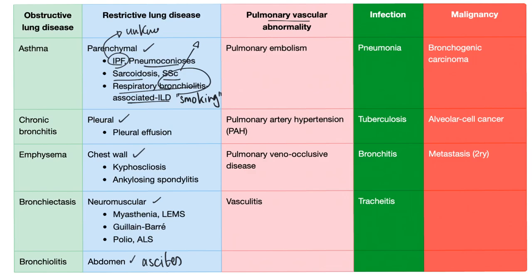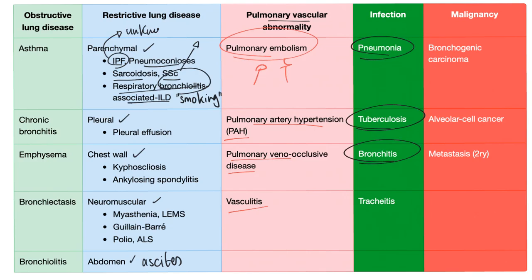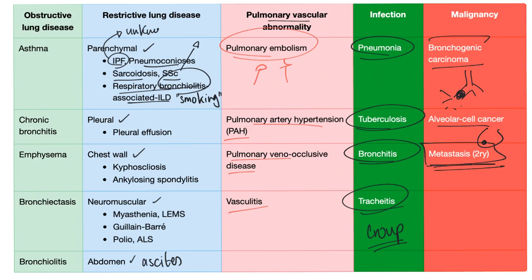Pulmonary vascular abnormalities include pulmonary embolism — very important and very dangerous — pulmonary artery hypertension, pulmonary veno-occlusive disease, and vasculitides. Infections include pneumonia, TB, bronchitis especially acute bronchitis, tracheitis, and in kids, croup or laryngotracheobronchitis. Malignancies include bronchogenic carcinoma arising from bronchi or bronchioles, alveolar cell cancer in the alveoli, or metastasis, which is by far the most common lung cancer because all circulation goes to the lung.